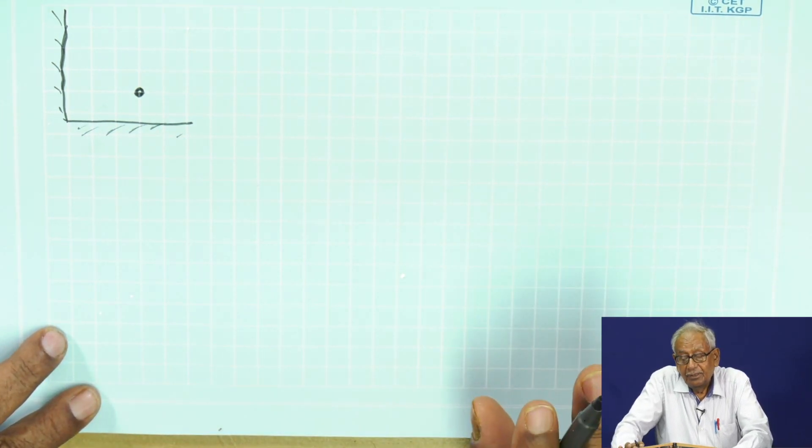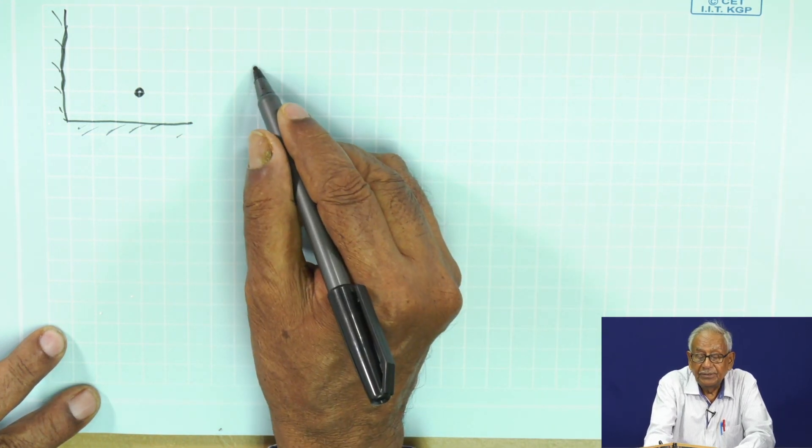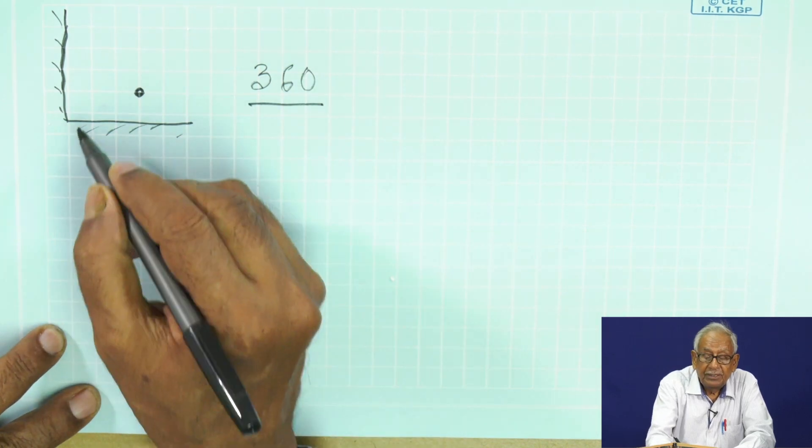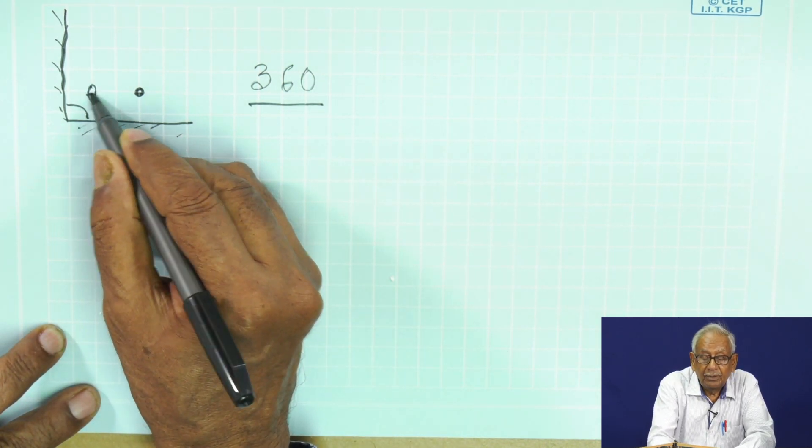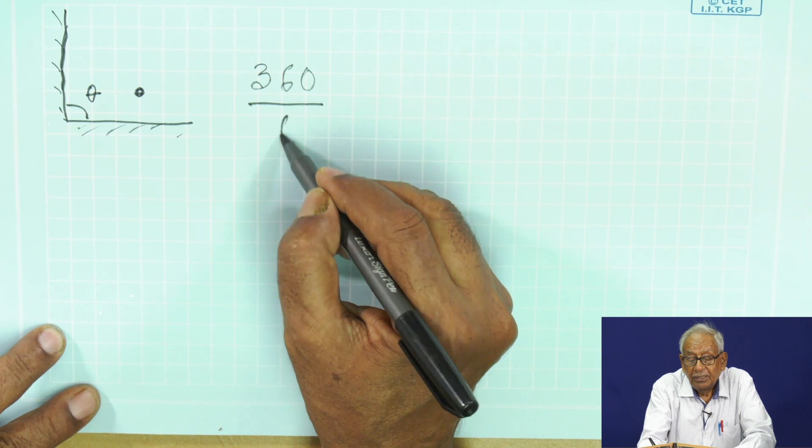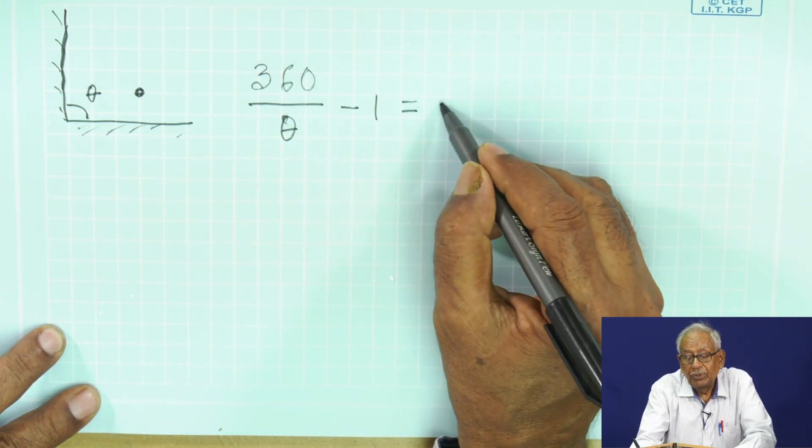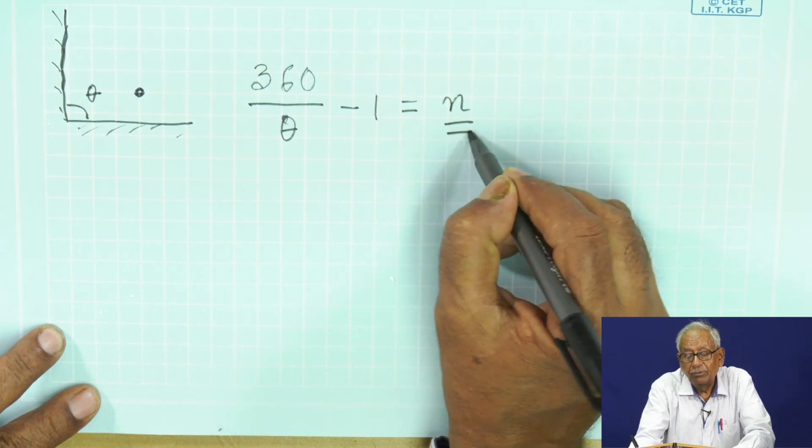There is an equation or formula which says that 360 divided by the angle between the mirrors—if we call it theta—divided by theta minus 1 will give you the number of images that will be found.